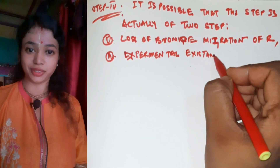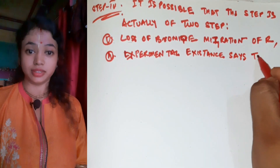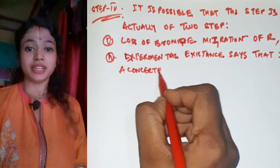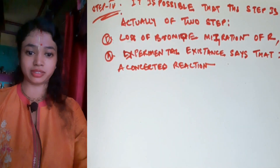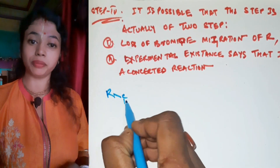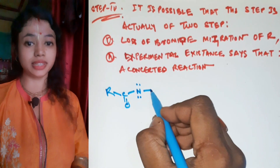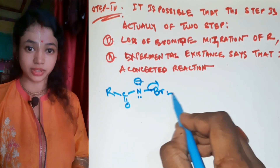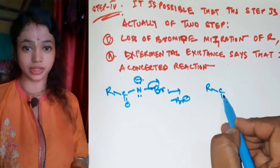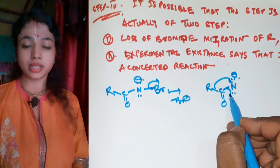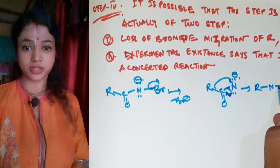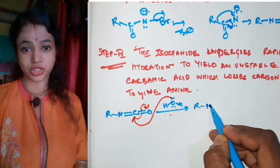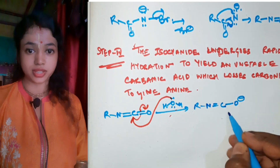In the concerted step, starting from R-C(=O)-N⁻, there is excess electron density on nitrogen. Bromine leaves the reaction medium, and simultaneously R shifts to nitrogen with an electron shift, forming R-N=C=O — the isocyanate intermediate.